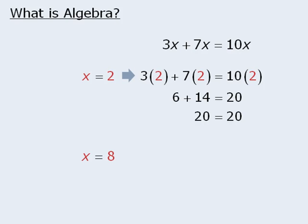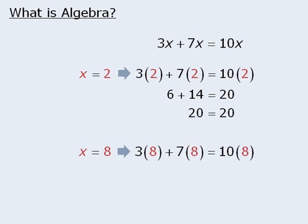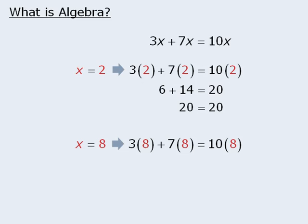Similarly, if x equals 8, we can evaluate 3x plus 7x and 10x by replacing each x with 8. When we evaluate the left-hand side, we get 80. And when we evaluate the right-hand side, we get 80 as well. So when x equals 8, 3x plus 7x and 10x both evaluate to be 80.